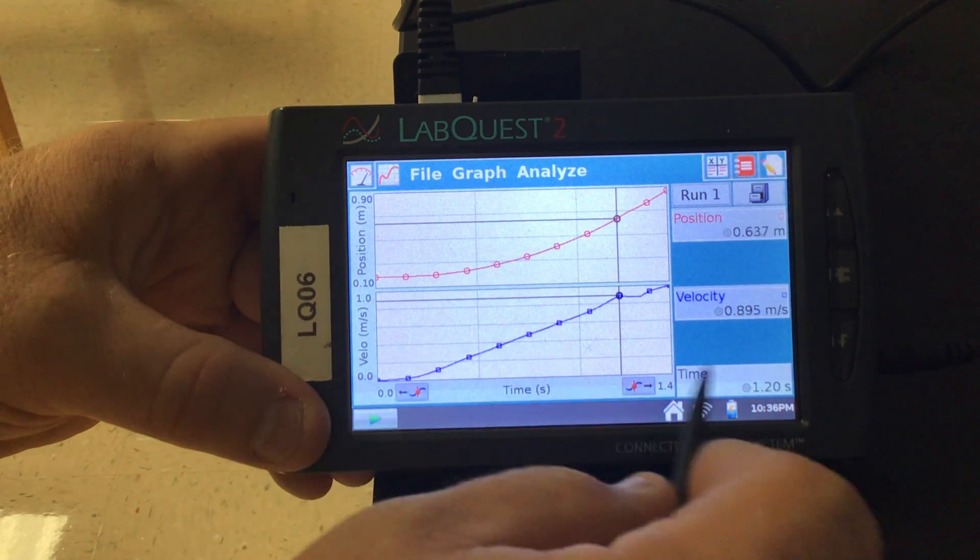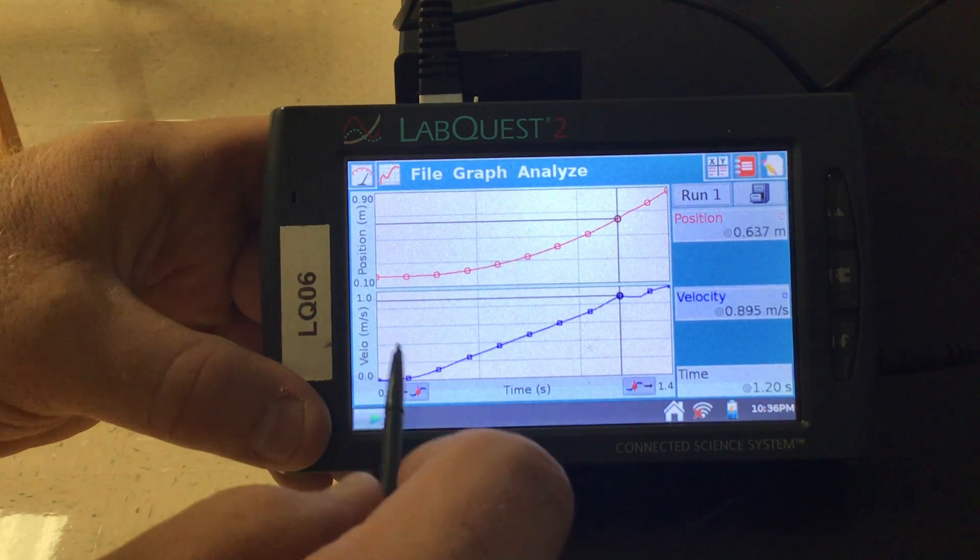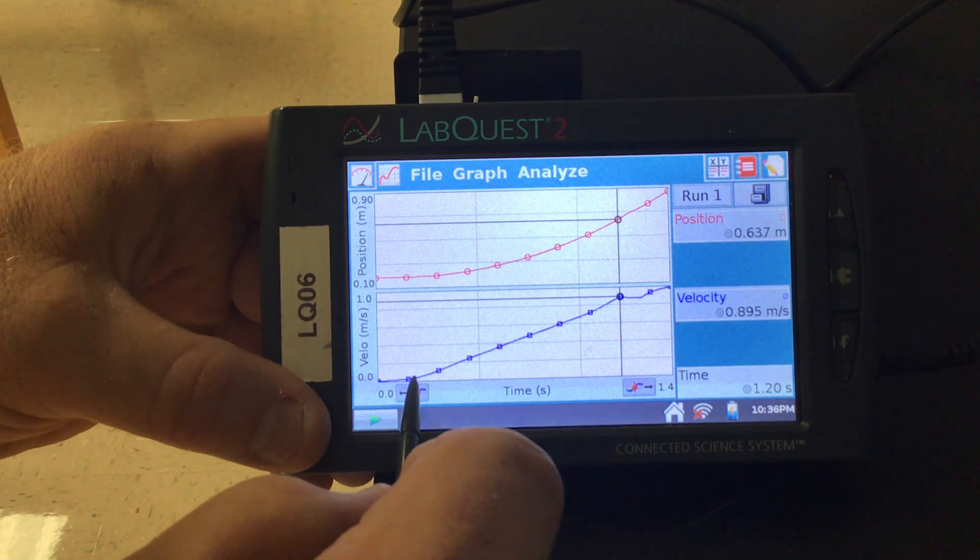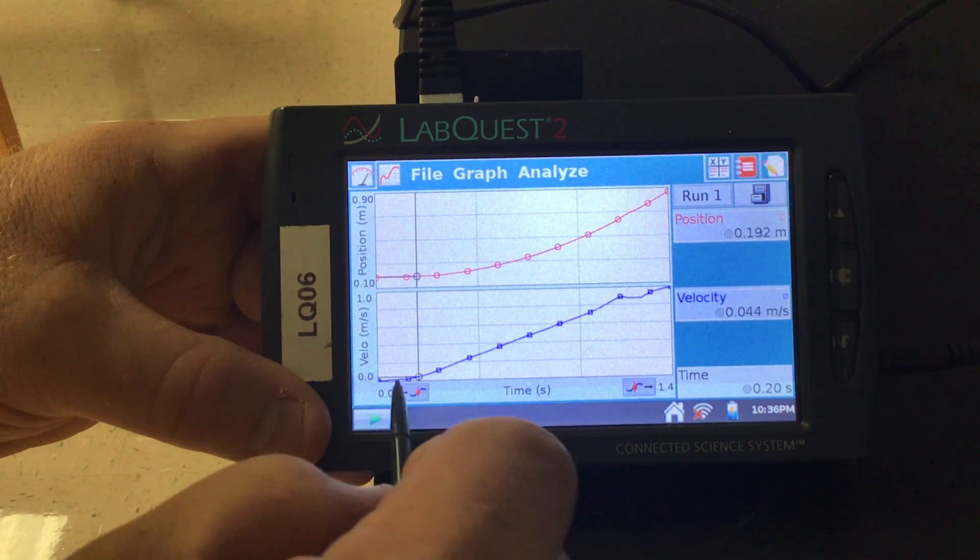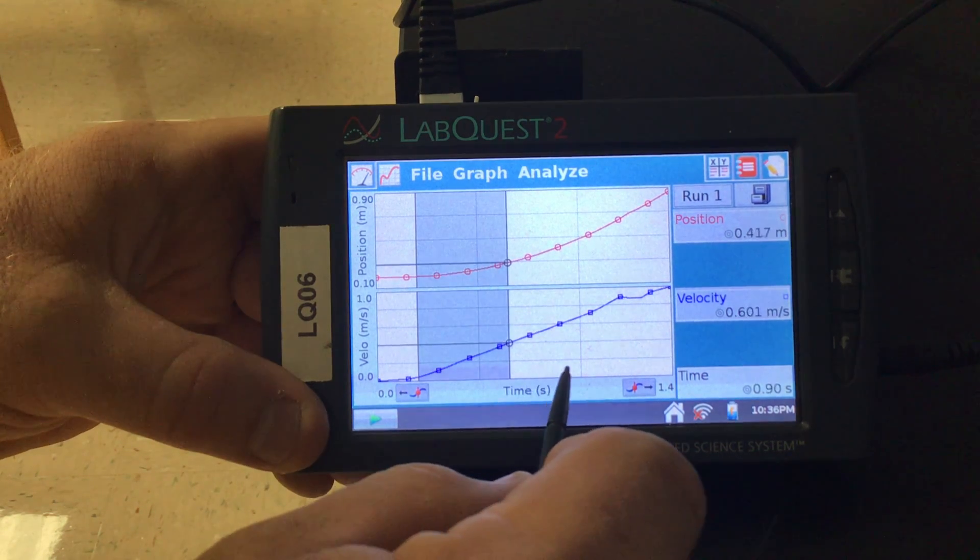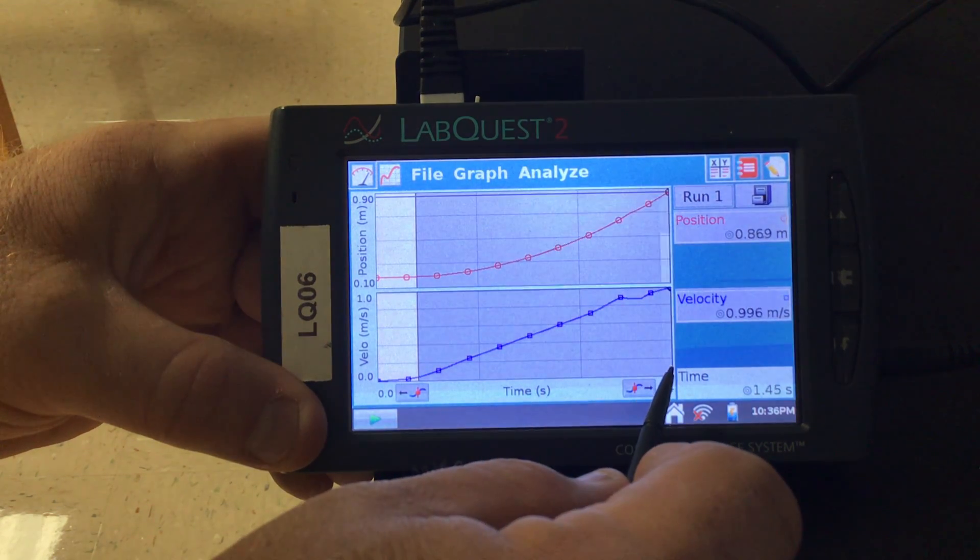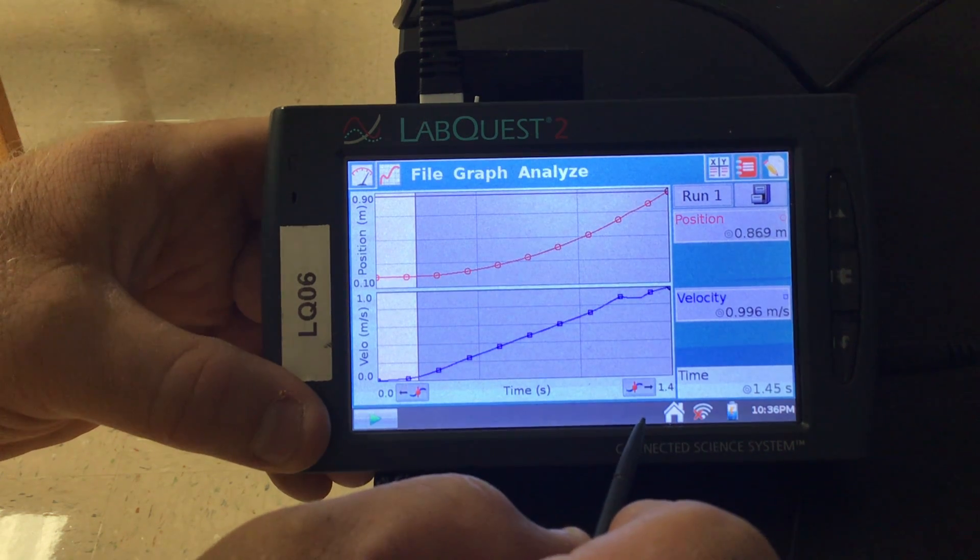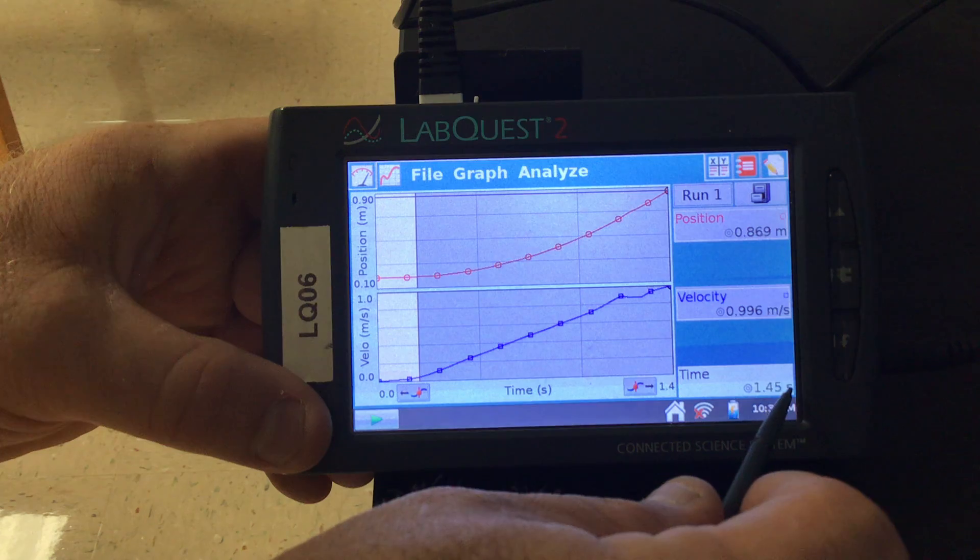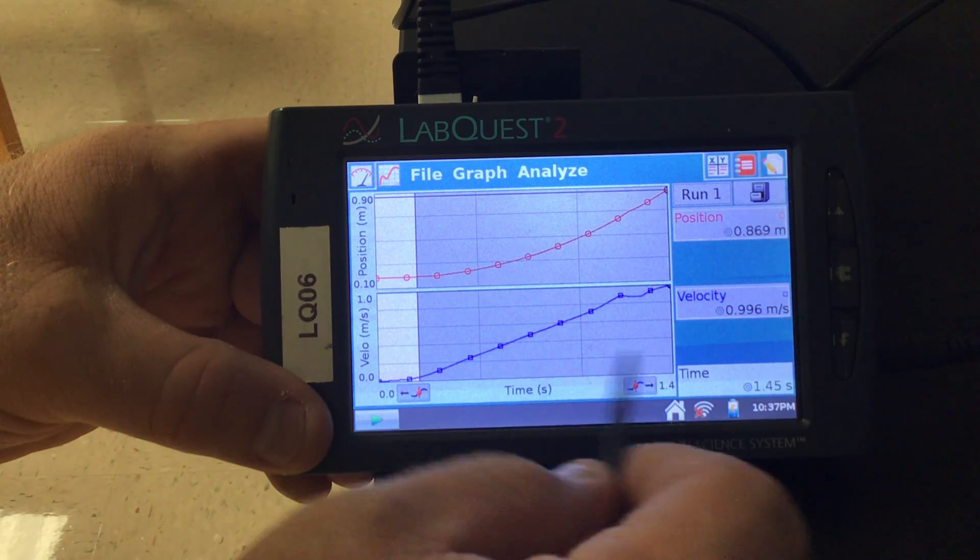Another thing I can do: if I want to know how long it took to do this whole thing, I know that as soon as it started to move right here is where my time started. This is where I was holding it still. So I can click and drag on the screen and go all the way to the end. That's when the rear of the cart came off. Over here in this little corner, it says that's 1.45 seconds. So that gives me the duration of this also.